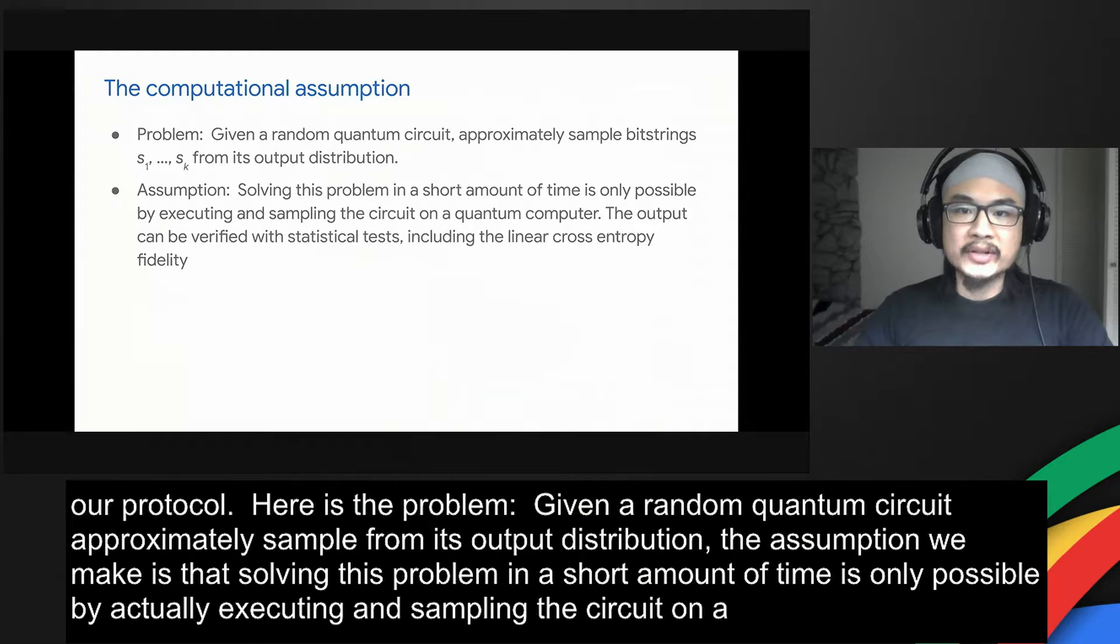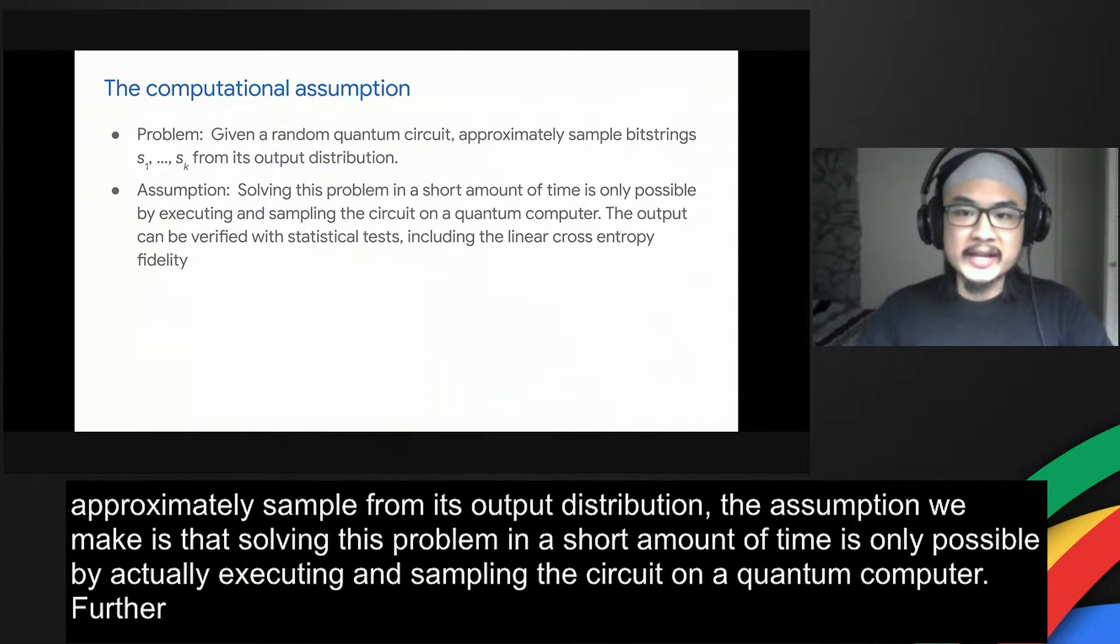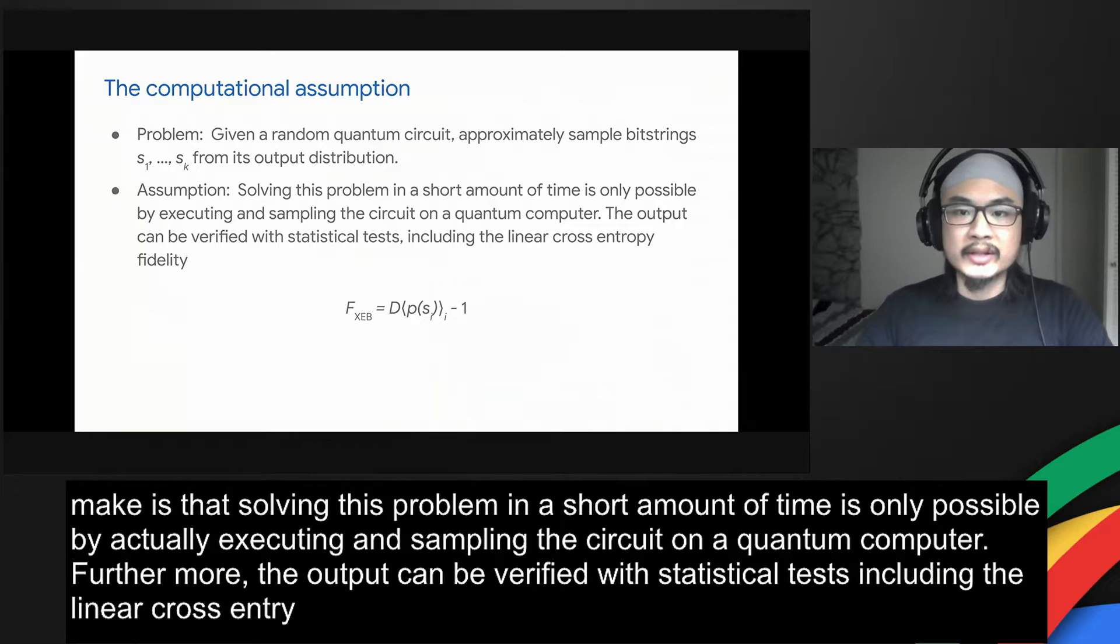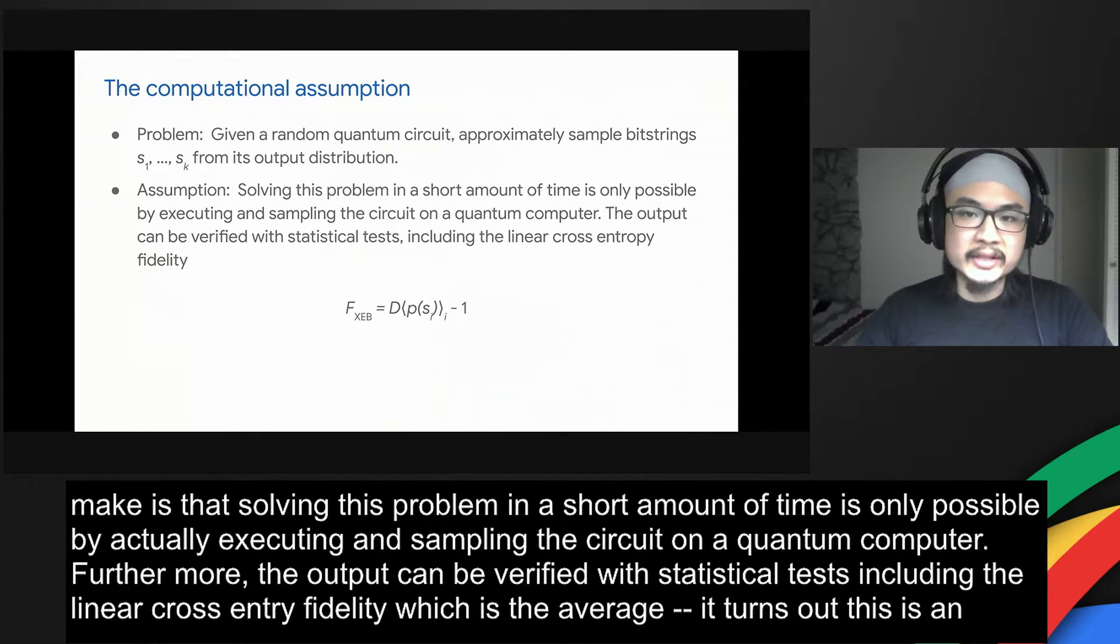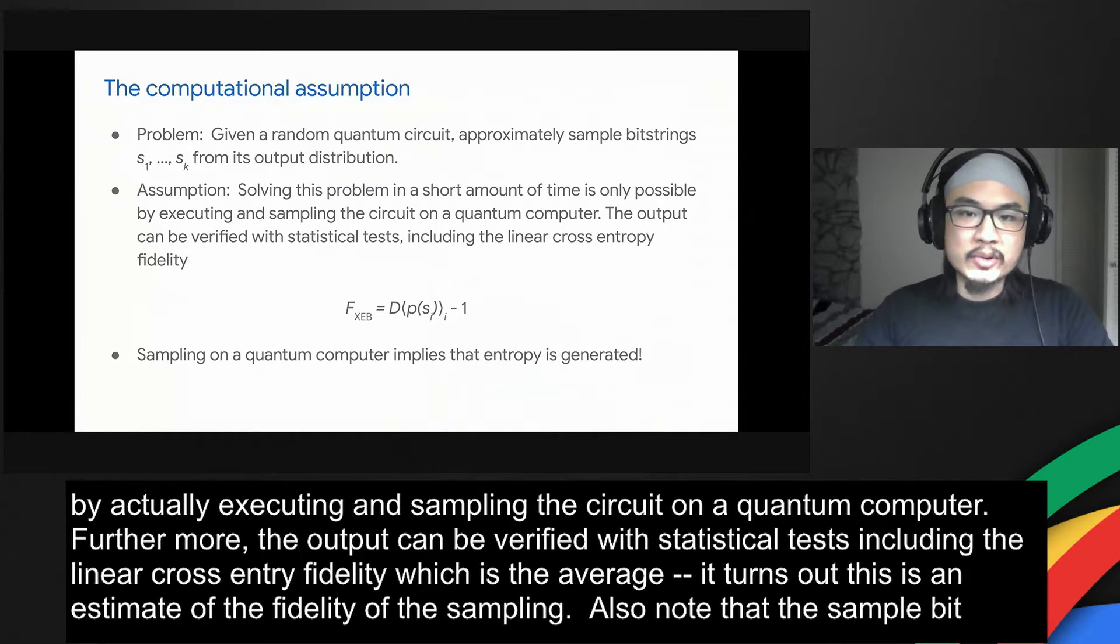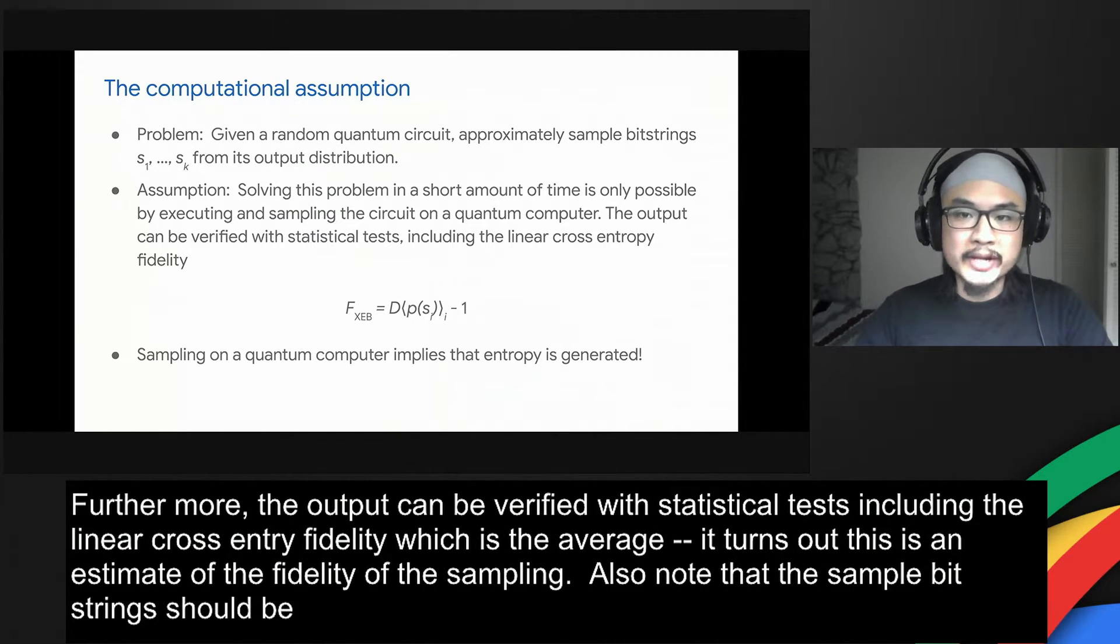Furthermore, the output can be verified with statistical tests, including the linear cross-entropy fidelity, which is the average of the probability values multiplied by the Hilbert space dimension minus one. It turns out that this is an estimate of the fidelity of the sampling. Also note that for large circuits, the sampled bit strings should be unique. The assumption of sampling on a quantum computer implies that true randomness is generated.